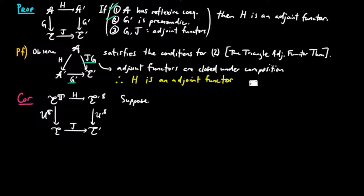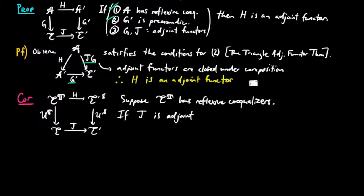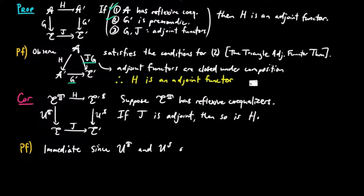Suppose the Eilenberg-Moore category for the monad T has reflexive co-equalizers. Then if J is in an adjoint situation, so is H. The proof is immediate since the forgetful functors are monadic.